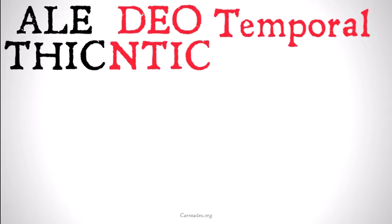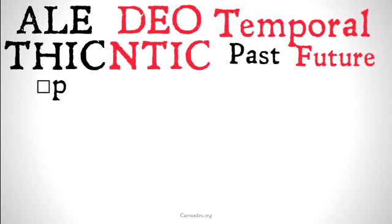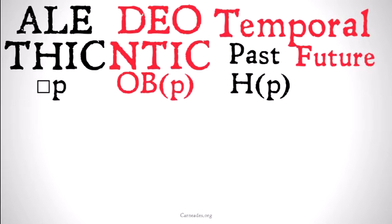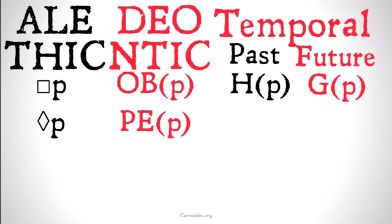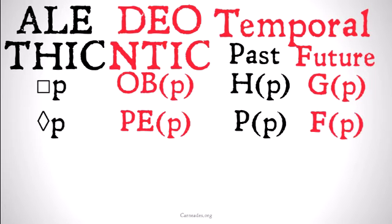To make that even more clear, let's compare alethic modal logic, deontic modal logic, and temporal modal logic — splitting temporal into past and future. 'It's necessary that P' is isomorphically similar to 'it's obligatory that P' in deontic logic, 'it has always been the case' in past temporal logic, and 'it will always be the case' in future temporal logic. 'It is possible that P' maps to 'it's permissible that P,' 'it was the case at some point in the past,' and 'it will be the case at some point in the future.'